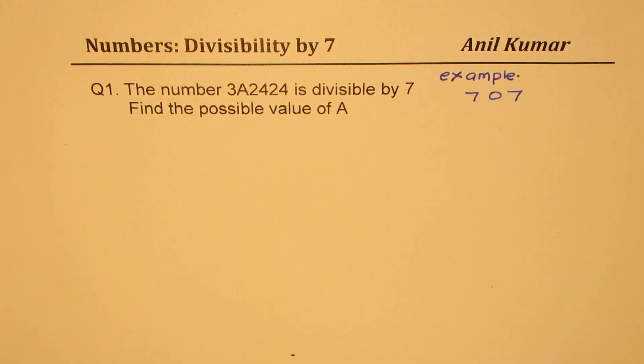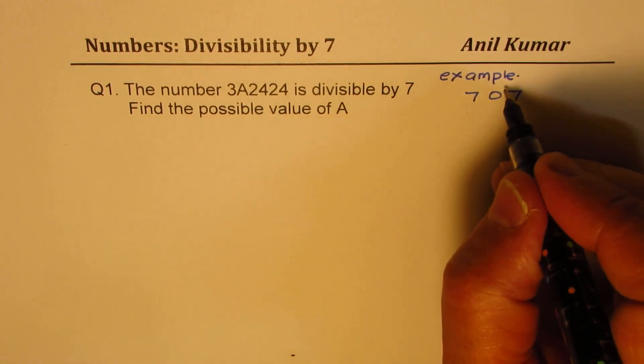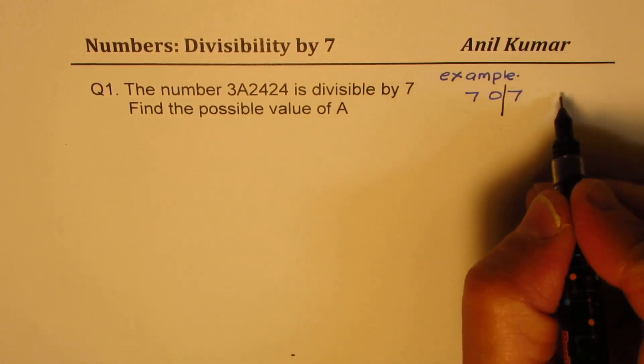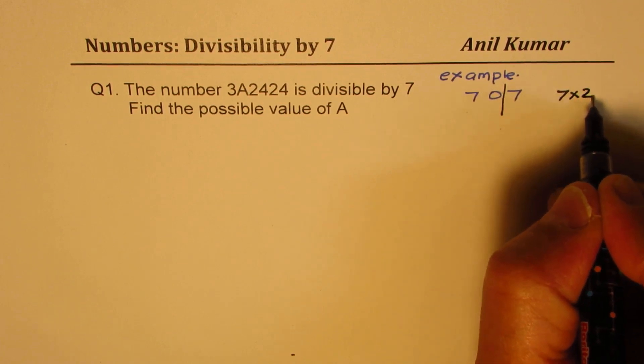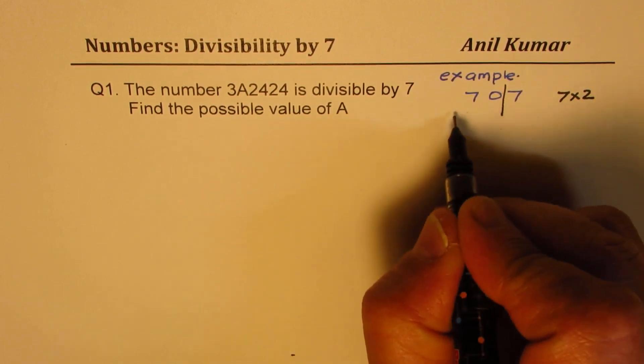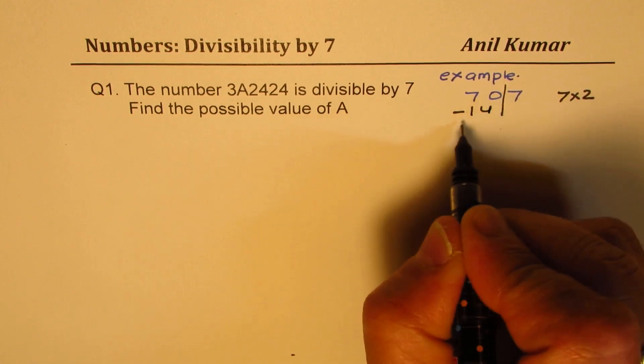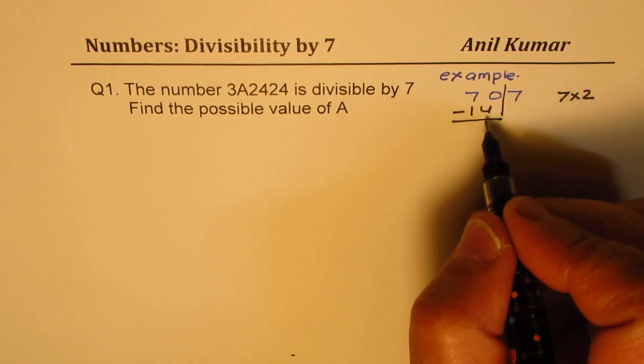We know it is a multiple of 7. So what I'm going to do is, I'll take the last digit, which in this case is 7, I'll multiply 7 by 2. We get 14. So we'll take away 14 from rest of the number. So what do we get here?